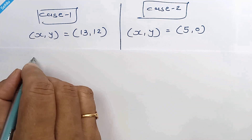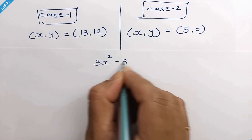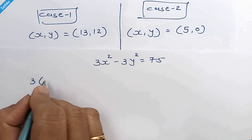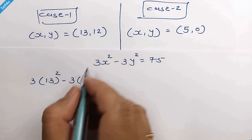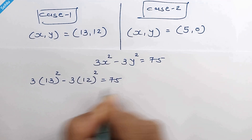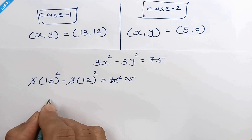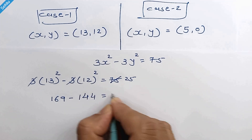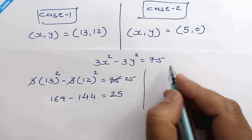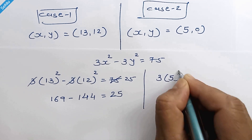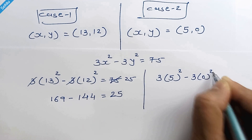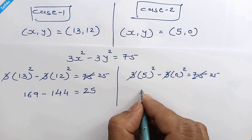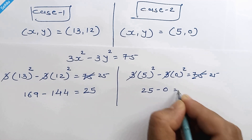Now let's verify the answers. Our equation is 3x squared minus 3y squared equals 75. For case 1: 3 times 13 squared minus 3 times 12 squared. Dividing both sides by 3, we get 13 squared minus 12 squared, which is 169 minus 144, equal to 25. That checks out. For case 2: 3 times 5 squared minus 3 times 0 squared equals 75. Dividing by 3, 5 squared minus 0 is 25 equals 25. Verified.